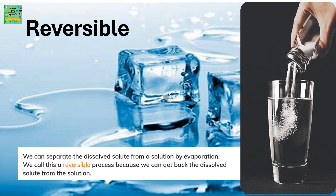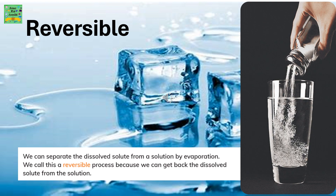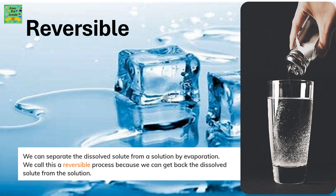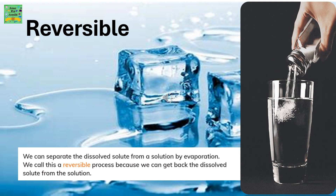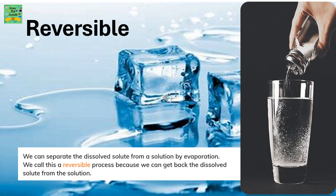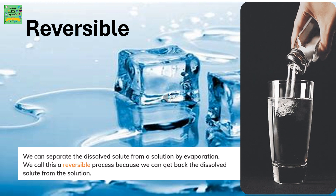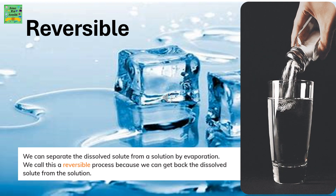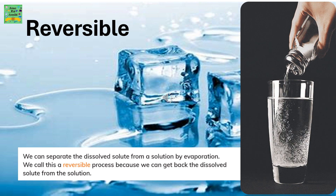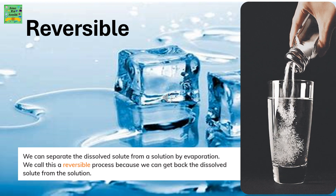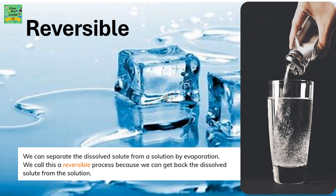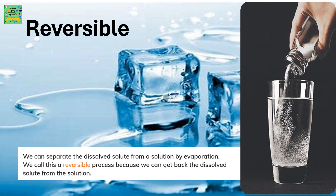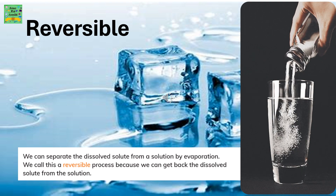We can separate the dissolved solute from a solution by evaporation. We call this a reversible process because we can get back the dissolved solute from the solution. For instance, when you freeze water to form ice, you can again heat the ice to get back the water.